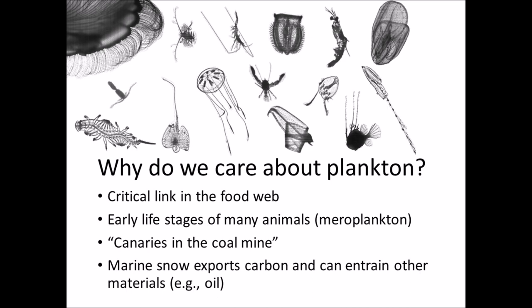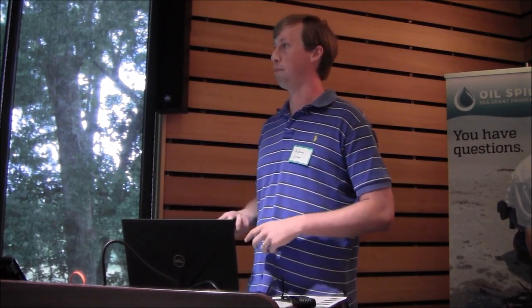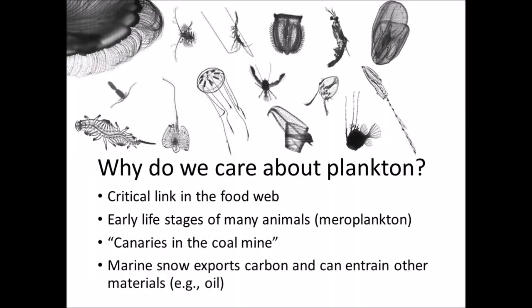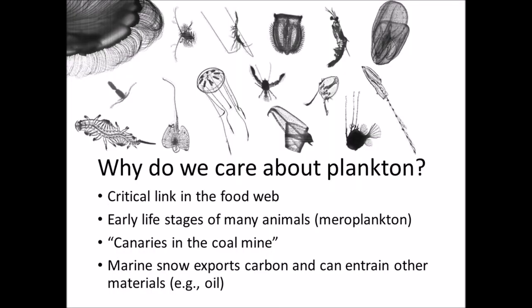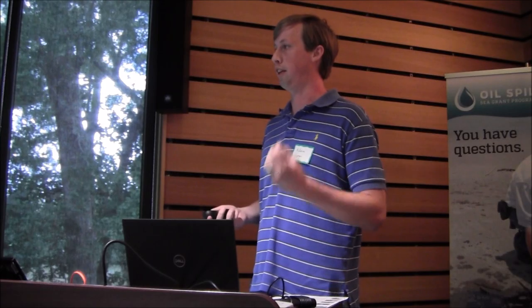Plankton are actually quite beautiful, but scientifically they're interesting because they're a critical link in the food web. Not much is known, especially in the Gulf, about why certain groups show up where and when. The early life stages of many marine animals are meroplankton, so we must understand oceanographic processes to understand population changes across different fish species. Because they have fast generation times, they're essentially a canary in the coal mine — biological indicators of ecosystem stress. And marine snow is a hot topic in oil spill science because it can export carbon as part of the biological pump, but also entrain oil and pollutants and move them around.